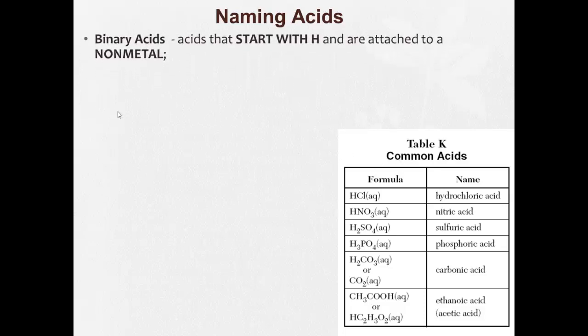So, typically a binary acid is an acid that starts with H and is attached to a non-metal. So here HCl is a binary acid. HF, HI are binary acids. And there's two total elements in the acid's formula.